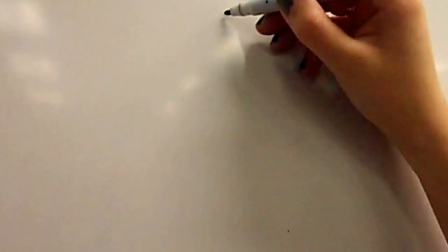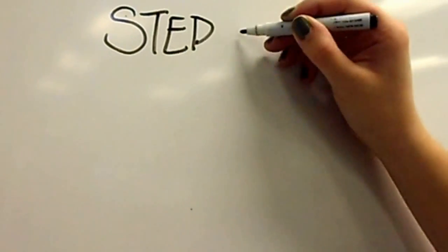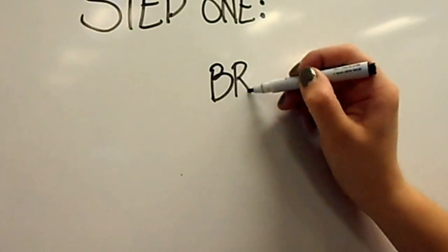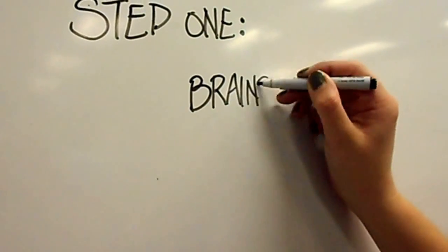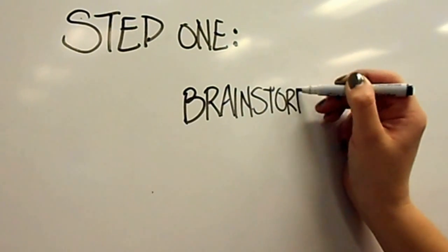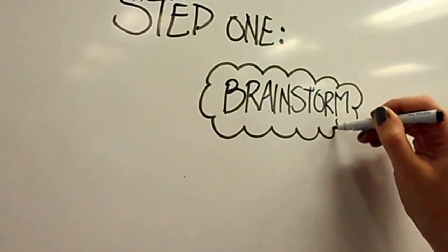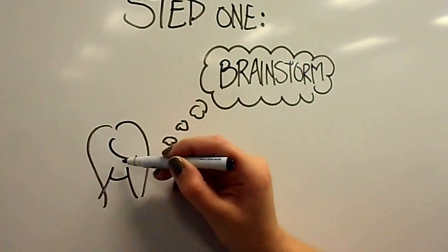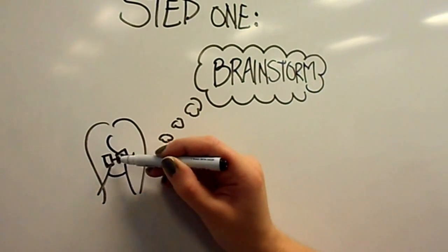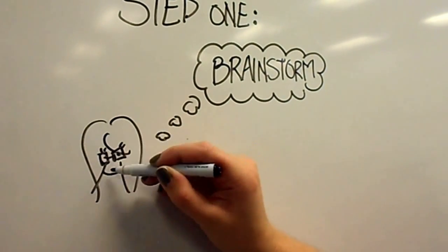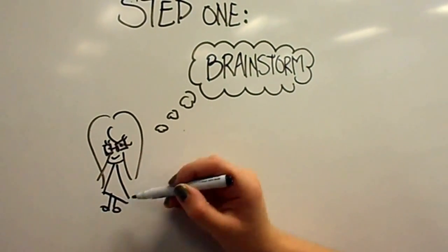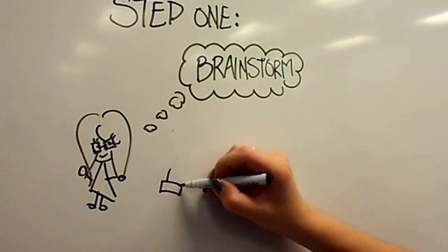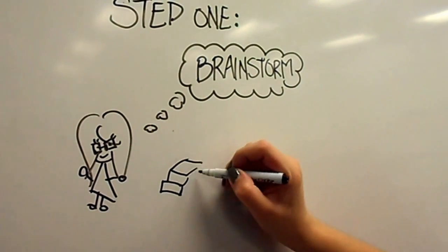The first thing you should do is brainstorm. You can identify a broad field or range of topics. Try to identify what is interesting to you, what fascinates you — really think about this. It may be something that you will be focusing on for a while, and therefore you want to pick a topic that you'll enjoy.